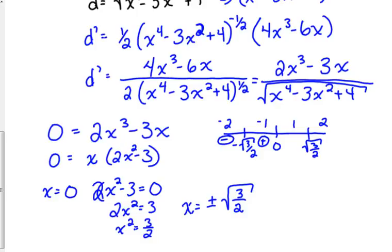We plug in 1 into the derivative. We've got 2 minus 3, so that's negative. The bottom is going to be positive. So that's a negative. And then when we plug in 2, we're going to end up with positive. So where the derivative changes from negative to positive, that creates a minimum. So we've got minimums at our square root answers here, not in 0. 0 would be a maximum. 0 would be the maximum distance.